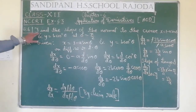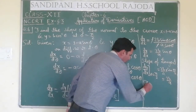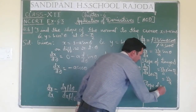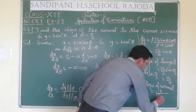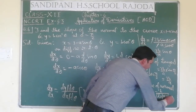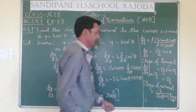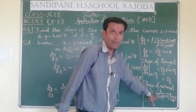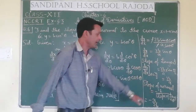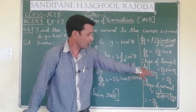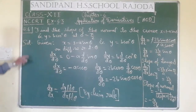This is not what is required. We need the slope of the normal. Slope of normal = -1 / (slope of tangent) = -1 / (2b/a). Taking the reciprocal and including the minus sign, the final answer is -a/(2b) for question number 6.